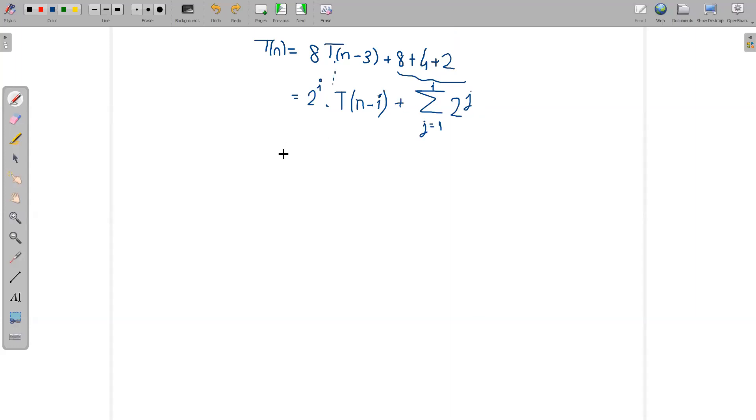We want to terminate that, so we know that T(0) is 2. How can we get to that value from here? So let's say when n-i is 0, which is that case, then I will say this is 2. When n is i, then it will terminate.